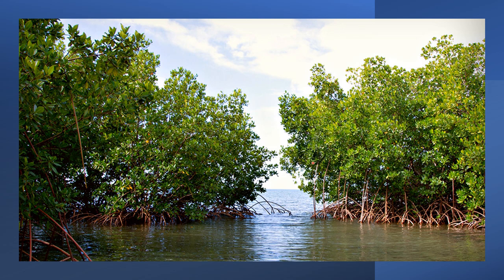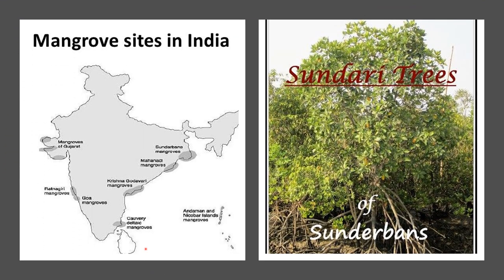The tidal forest, or mangrove forest, is found in swampy areas that are constantly washed by sea water during the high tide. Such vegetation has adaptability to survive in both salty water and fresh water. It is commonly found in the eastern coastal region of India, especially along the Ganga-Brahmaputra Valley, and in the southern part of West Bengal where we have the Sundarbans — named for the abundance of the Sundari trees.